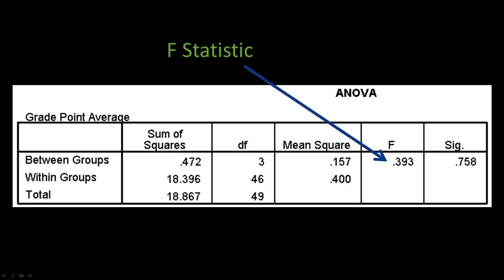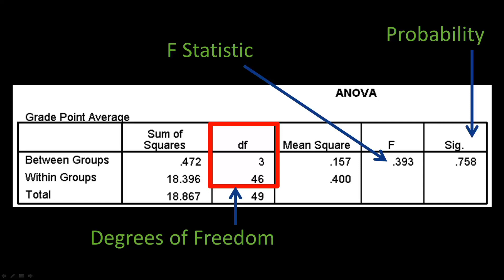Here is the F statistic. When rounded to two decimal places, it is .39. Here's the probability. When rounded, it is .76. And as shown in the red box, ANOVA has two different degrees of freedom, one for between groups and another for within groups.